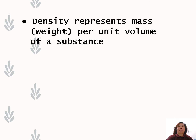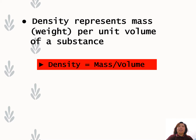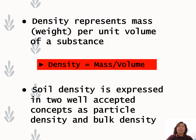Density represents mass per unit volume of a substance, with the formula: density is equal to mass divided by volume. In soil, soil density is expressed in two well-accepted concepts: particle density and bulk density. So we have two types of soil densities, which are the particle and the bulk density.